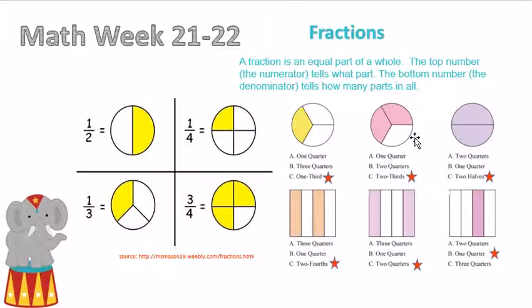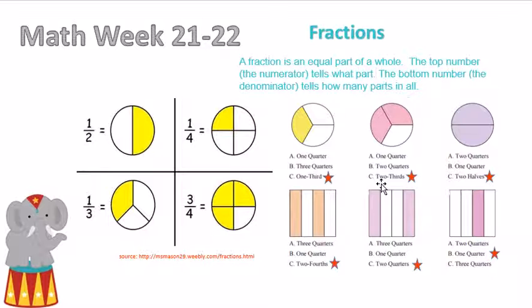On this one, we have one, two, three parts, so we know that the second part of the name will be thirds. We have two parts shaded in, so it is two-thirds.